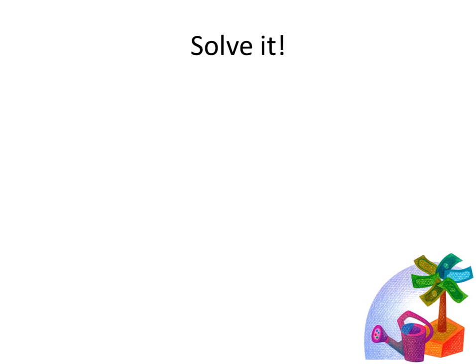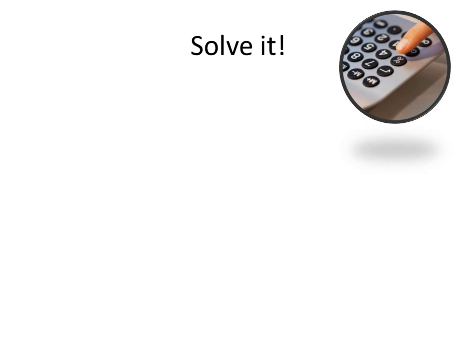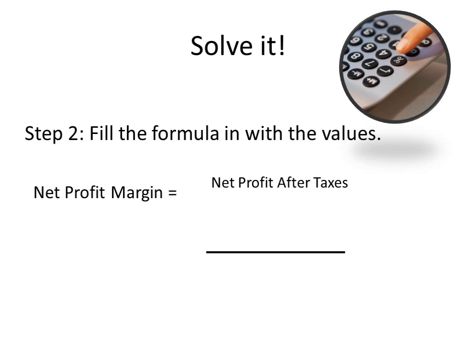Now that you know where to find the information, it's time to solve it. Step one is identifying the formula — we want to make sure we identify the correct formula to ensure our calculation is accurate. The next step involves filling it in with the values. After all, your calculations can only be as accurate as your information. The net profit margin equals net profit after taxes divided by total revenues.